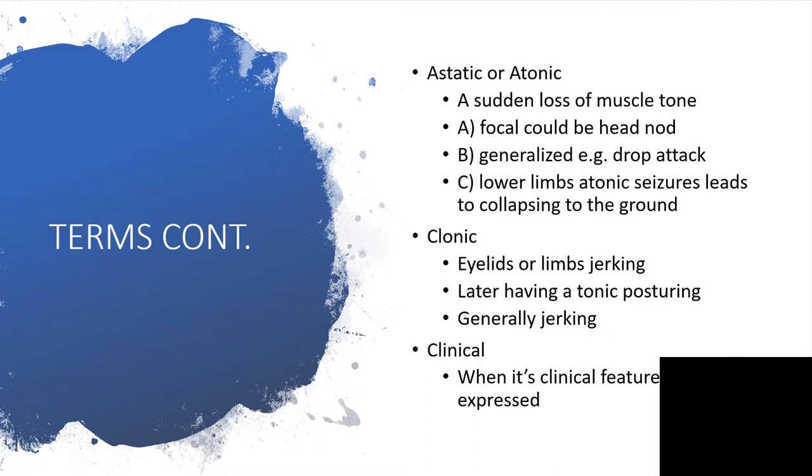It could be clonic. When it is clonic, it could be affecting the eyelids. The eyelids will be blinking repeatedly. Or the limbs will just be jerking repeatedly. And the individual could later be having a tonic posturing, a kind of stiffness, and generalized jerking.